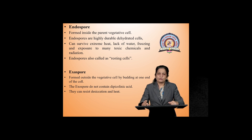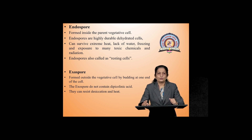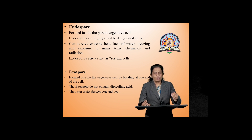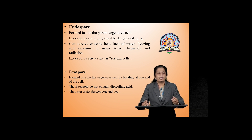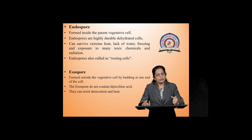These endospores are also known as resting cells, meaning they are not multiplying in this phase. The second type of spore is known as exospores. These exospores are formed outside the vegetative cells — just like bud formation, the spores are formed at one end. These exospores do not contain a special compound, dipicolinic acid, which is present in the endospore. They can also resist desiccation and tolerate heat.